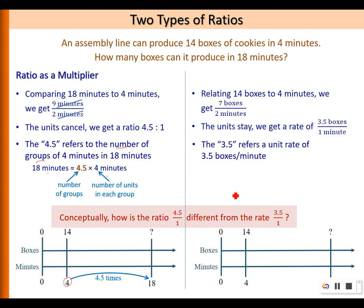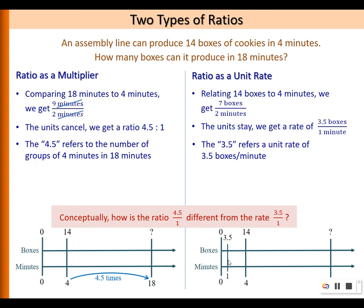Whereas 3.5 is actually a unit rate of 3.5 boxes per minute. So here we are using ratio as a unit rate, and you can see it's relating 3.5 boxes for every 1 minute.